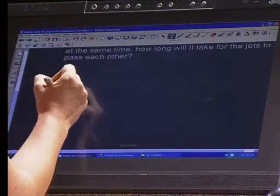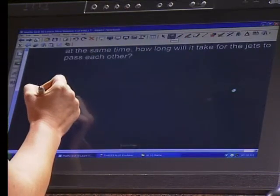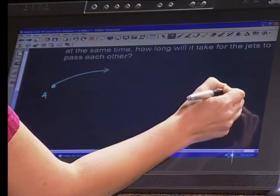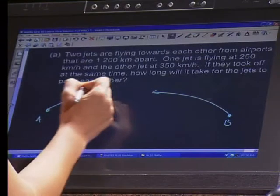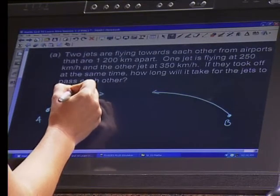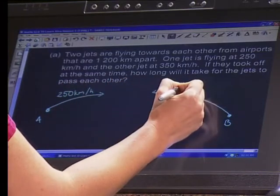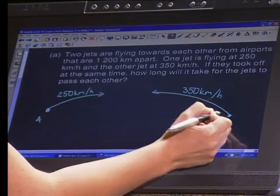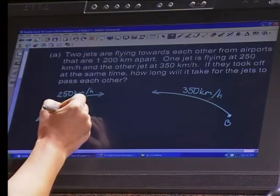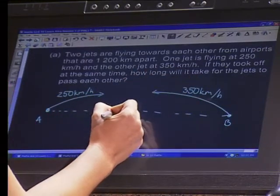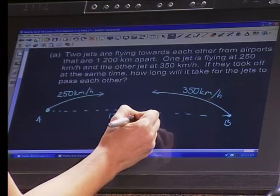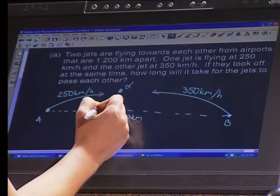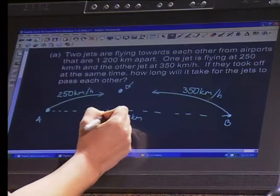Sometimes it helps to draw a little picture. So here we have Airport A and Airport B. We've got one jet that's flying this way and the other jet that's flying that way. This jet is traveling 250 kilometers an hour and this one is traveling 350 kilometers per hour. So this jet B is actually traveling faster than jet A. The distance between the two airports is 1,200 kilometers. Now when these two jets meet or pass each other at this point, their combined distance is going to be 1,200 kilometers.